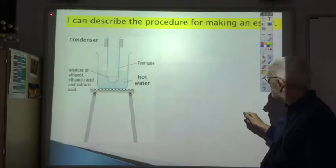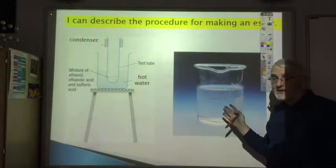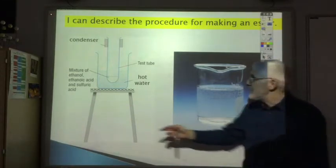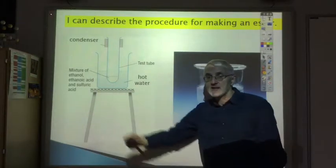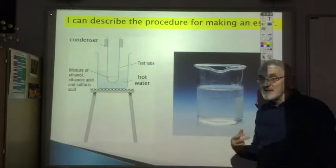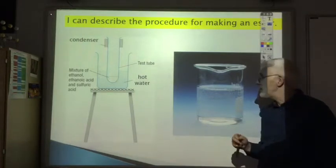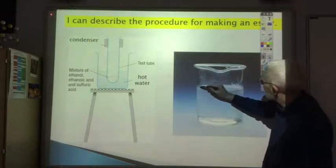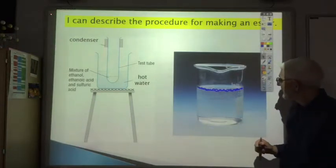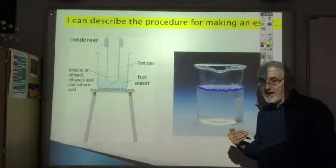Once the reaction is completed, we pour the reaction mixture into a beaker containing a base — sodium hydrogen carbonate — which neutralizes any unreacted ethanoic acid and the sulfuric acid catalyst. Our product, the ester, is immiscible with water so they form two separate layers. The ester is less dense than water, so it forms a layer on the surface of the aqueous solution, allowing us to smell its pleasant aroma.